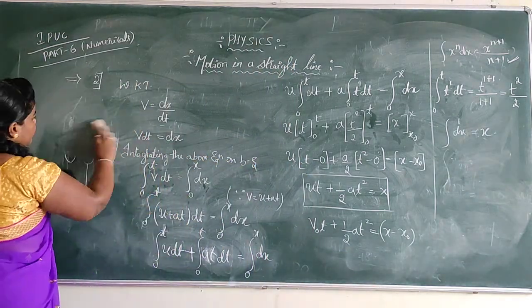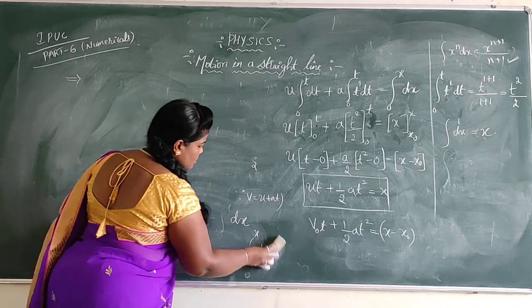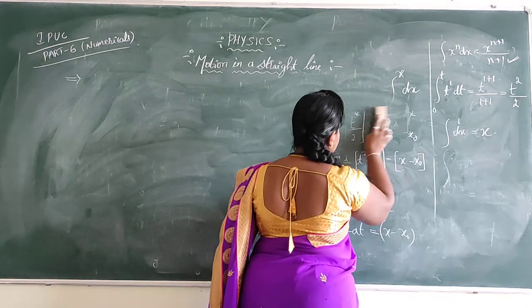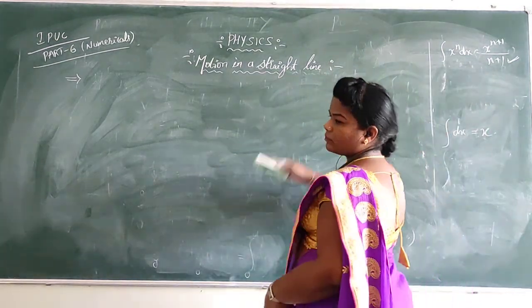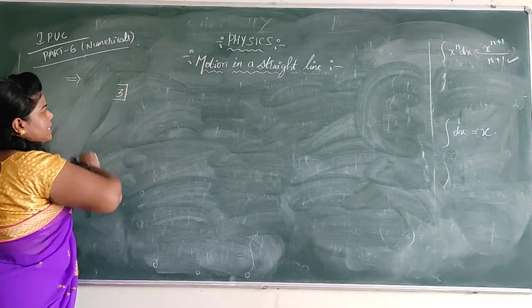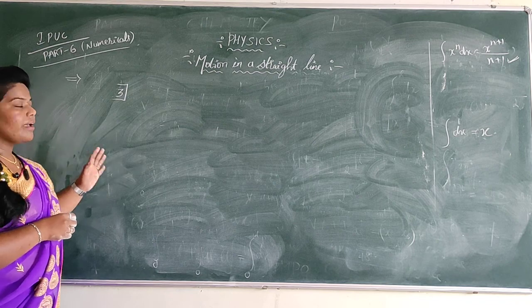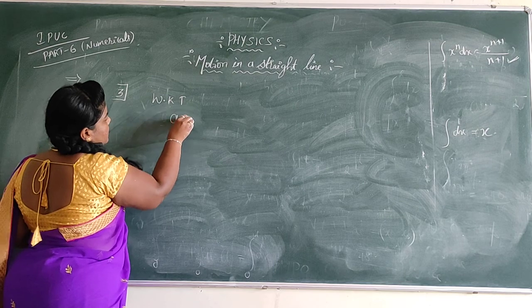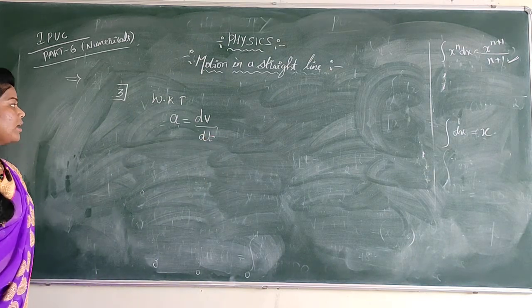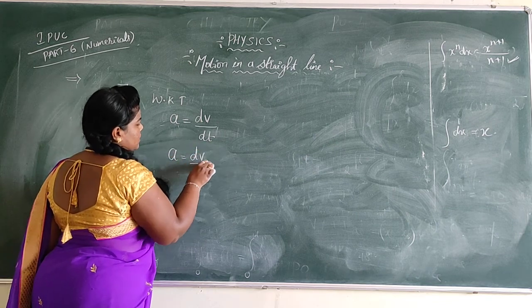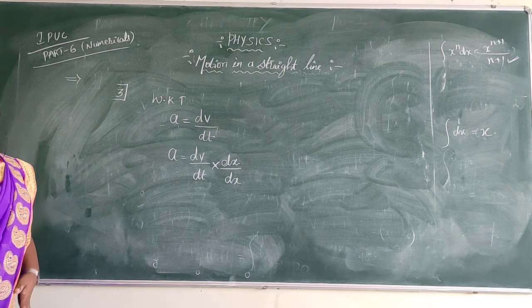There is a third equation of motion that we can also deduce by using the same calculus method. While deducing this, I am again going to use the acceleration formula. We know that acceleration is the rate of change of velocity, that is dv by dt. Just for consideration to deduce the expression, I am multiplying and dividing this by dx, so nothing is going to change for the expression.